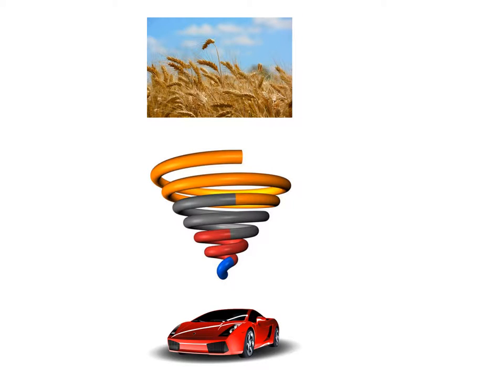Let's take a slightly different angle on trade and talk about something called roundabout production. Let's pretend someone invents a machine that rearranges the molecules in wheat and turns it into a car. Farmers would ship their wheat to the machine, it goes in, and out comes a car. This would be a truly great invention. Maybe farmers wouldn't use it if the price of wheat were too high, but maybe they would. From the point of view of what's best for an economy, we could make cars the old-fashioned way or use this machine. If people were using the machine, that probably meant it was cheaper, and that would be considered a good thing.